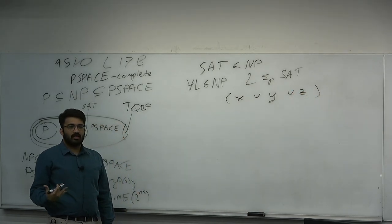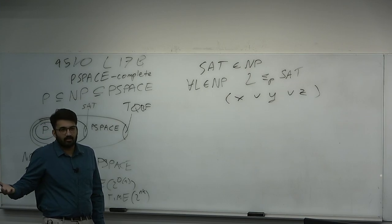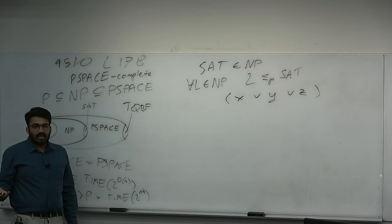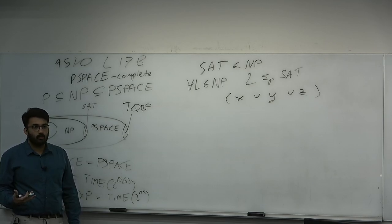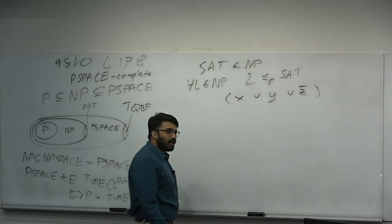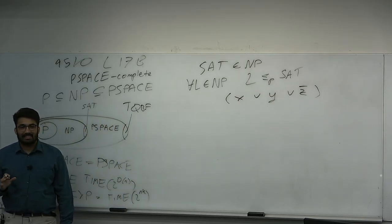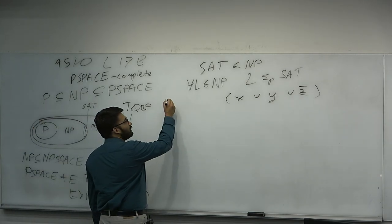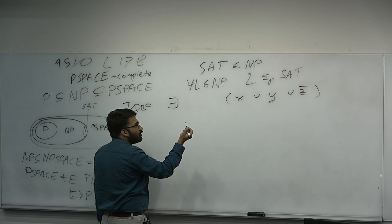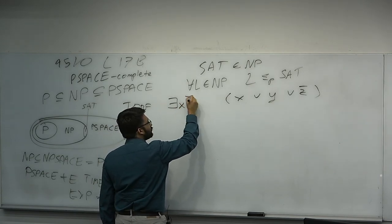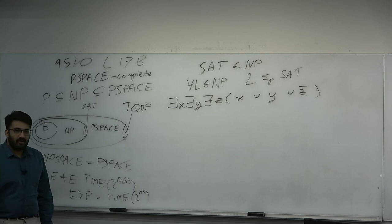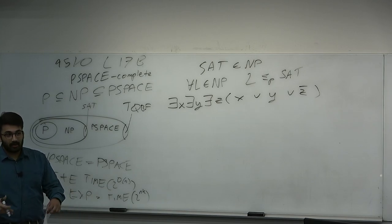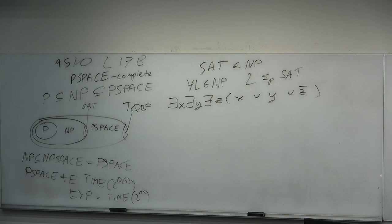When we wrote down a Boolean formula like X or Y or Z, we said they had free variables. But when we put them in SAT, those that are in SAT actually don't have free variables — there is a hidden quantifier we never wrote down. A formula is satisfiable if there exists a satisfying assignment: there exists X, there exists Y, there exists C, such that X or Y or not C. SAT is existentially quantified by definition; we just didn't write the quantifier.